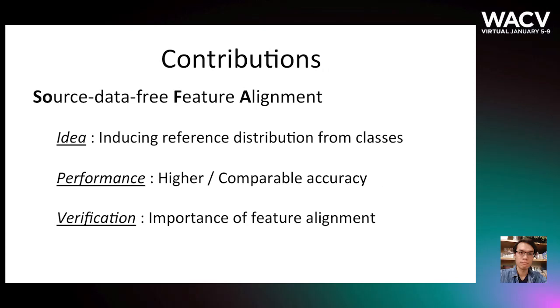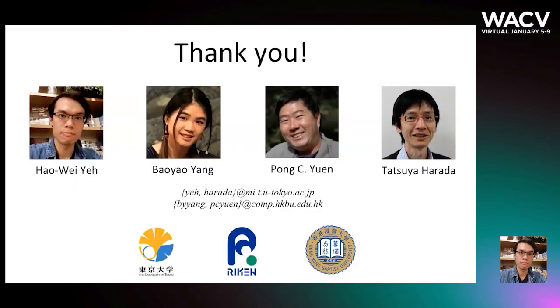In conclusion, we summarize our contributions as follows. First, we propose an idea of inducing reference feature distribution from predicted classes, and propose the method of source data-free feature alignment, SOFA, to extract features with class semantics. Thus, realize UDA without accessing the source data. We then show the proposed method achieves higher or comparable accuracy when comparing to existing methods on a wide range of UDA classification tasks. Finally, by conducting ablation studies, we also verify the importance of feature alignment in the area of source data for UDA. Thank you very much for your attention. Please refer to our paper for more details.